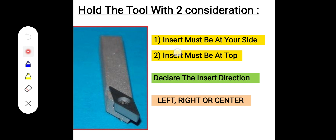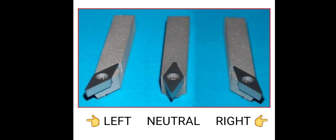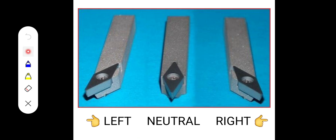In the corrected second image, checking the first condition: insert must be at your side — insert is definitely at our side. The second condition: insert must be at the top — in this picture the insert is already at the top of the tool. Both considerations are correctly defined. The insert came at the right direction, so this tool is known as a right-hand tool.